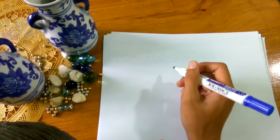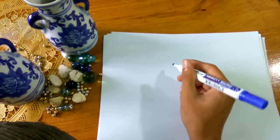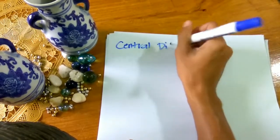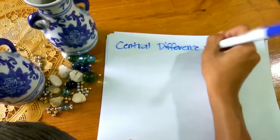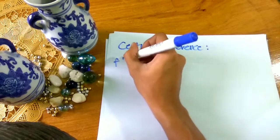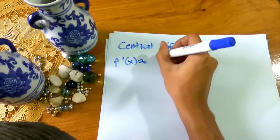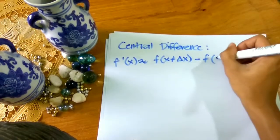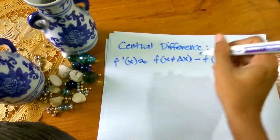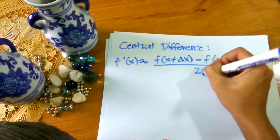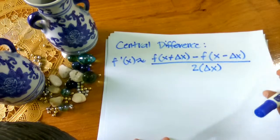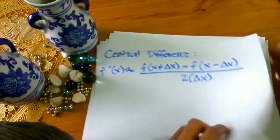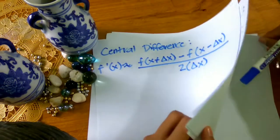Since we have found the approximate derivative of our function using forward and backward, let us now move on to the central difference. Ang central difference ay may formula na: approximation of f'(x) equals f(x + delta x) minus f(x minus delta x), all over 2 times delta x. So para mas maintindihan ang central difference, solve naman natin ang ating function kanina by using central difference.